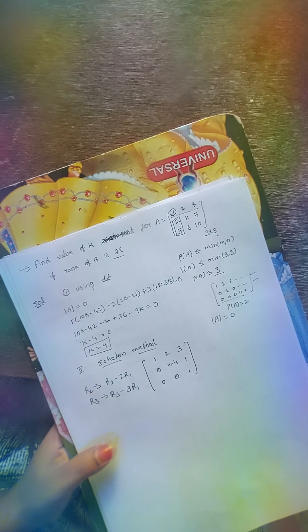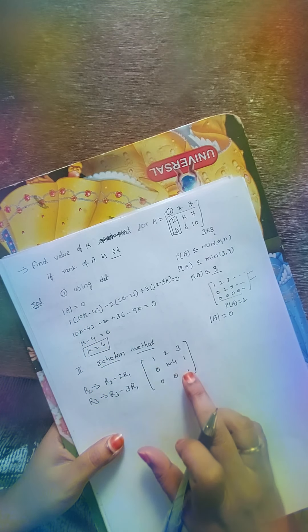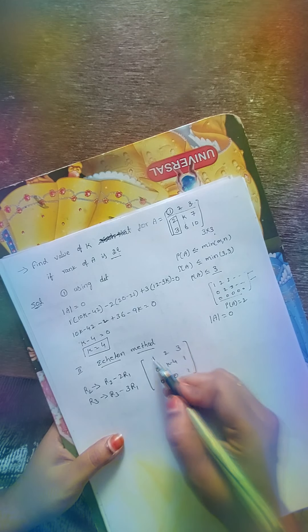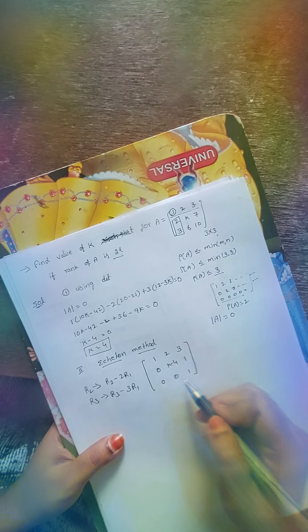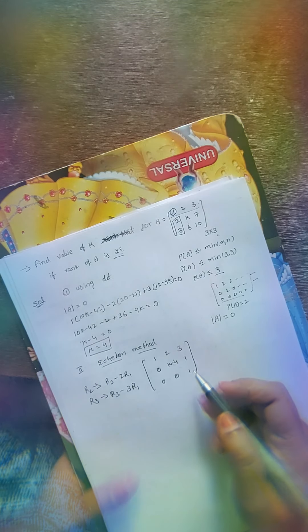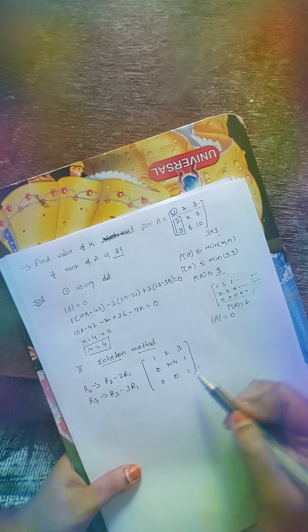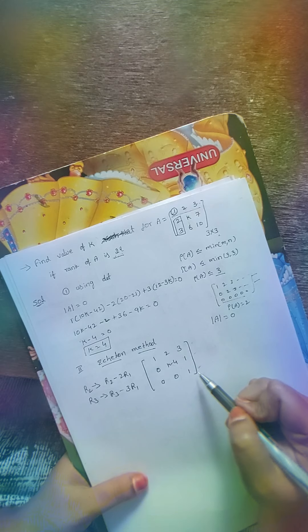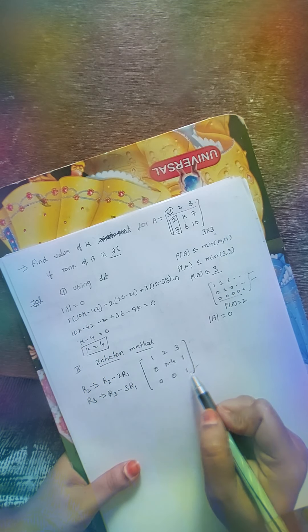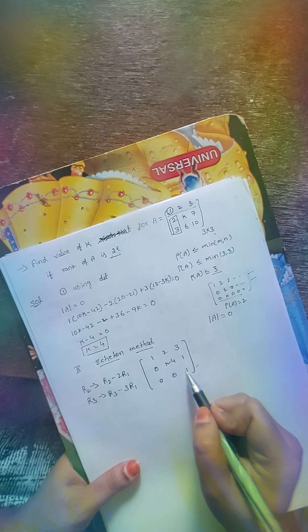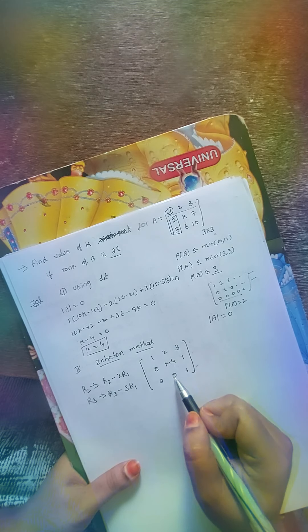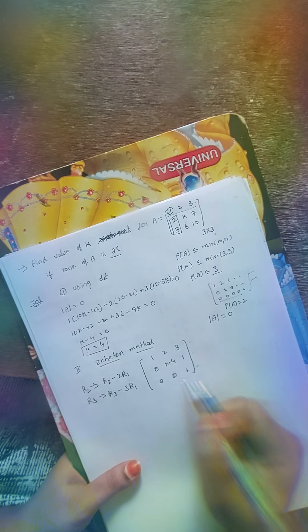The matrix is now in row echelon (upper triangular) form, with all elements below the principal diagonal equal to 0. However, there are currently 3 non-zero rows, giving rank 3. To make the rank equal to 2, we need one row to become all zeros. Applying R3 → R3 − R2 eliminates the last row: (0 − (K−4)) and (1 − 1) = 0. This gives −K + 4 = 0, hence K = 4.